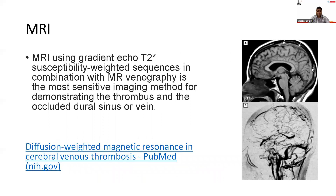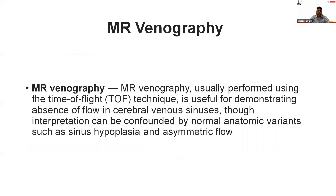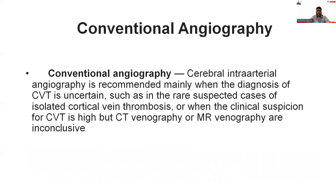MRI using gradient echo T2 susceptibility-weighted sequences in combination with MR venography is the most sensitive imaging method for demonstrating the thrombus and occluded dural sinuses. MR venography, usually performed using the time-of-flight technique, is useful for demonstrating absence of flow in cerebral venous sinuses, though interpretation can be confounded by normal anatomical variants such as sinus hypoplasia and asymmetric flow. Conventional intra-arterial angiography is recommended mainly when the diagnosis of CVT is uncertain — such as in suspected isolated cortical vein thrombosis — or when clinical suspicion is high but CT or MR venography is inconclusive.